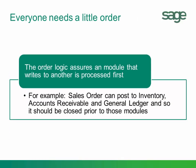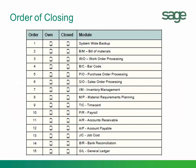We need to be aware of the order in which we close. The order logic assures that a module that writes to another is processed first. For example, sales order can post inventory, accounts receivable, and general ledger — so it should be closed prior to those modules. There is an order of closing that you can find on the website, displayed here, and you would want to follow this so that everything is processed in the logical framework for those modules that write to each other.